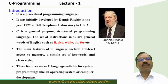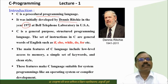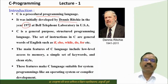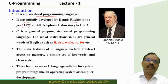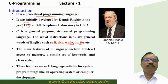C is a procedural programming language. It was initially developed by Dennis Ritchie in the year 1972 at Bell Telephone Laboratory in the USA for telephone communications. C is a general-purpose, structured programming language. It is very easy to understand because the set of instructions in C use general English words such as if, else, while, do while, for, etc. The main features of C include low-level access to memory, a simple set of keywords, and a clean style of writing.